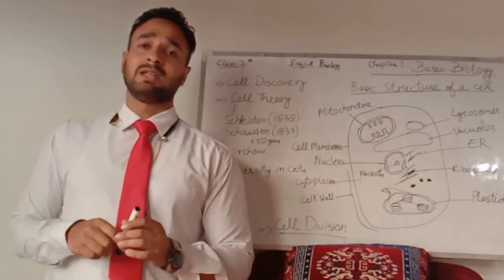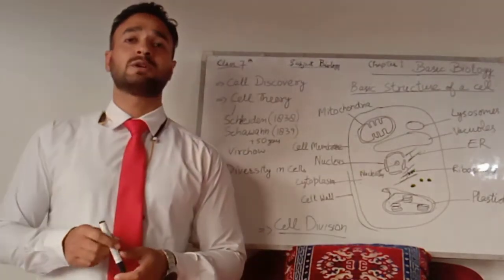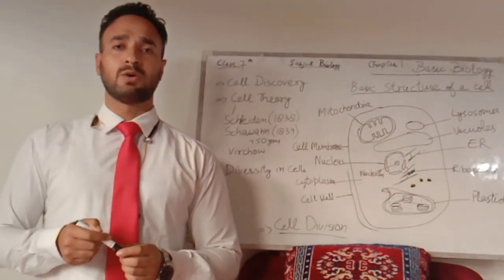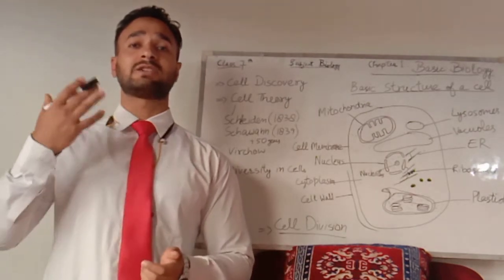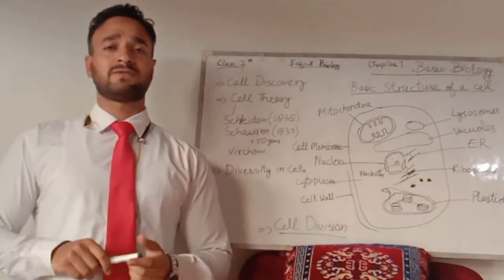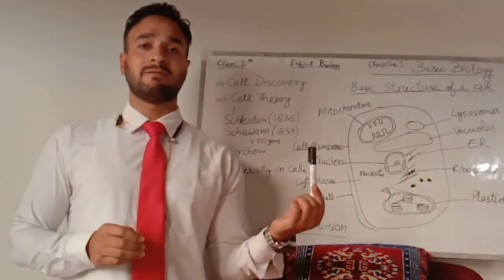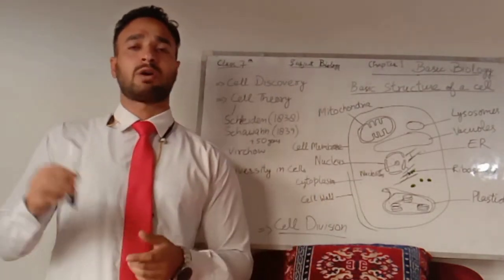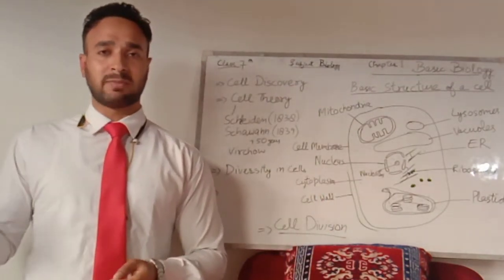Then came a second person — his name was Robert Hooke. He invented a compound microscope. Know the difference: Anton van Leeuwenhoek invented a simple microscope, but Robert Hooke invented a compound microscope.